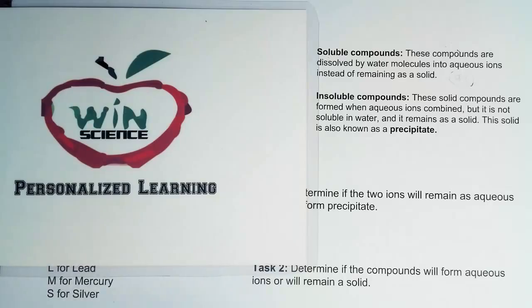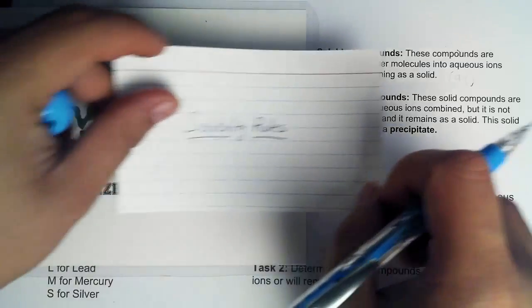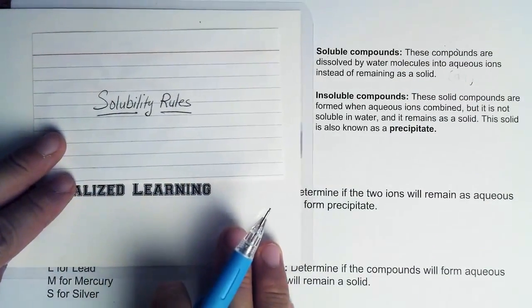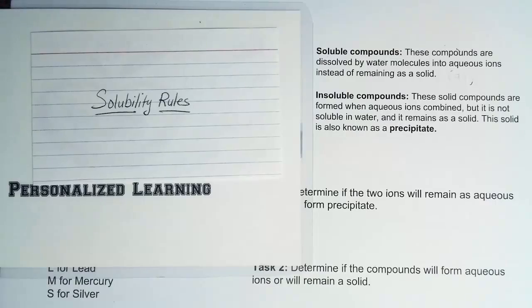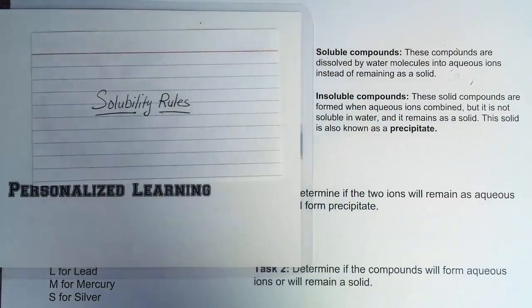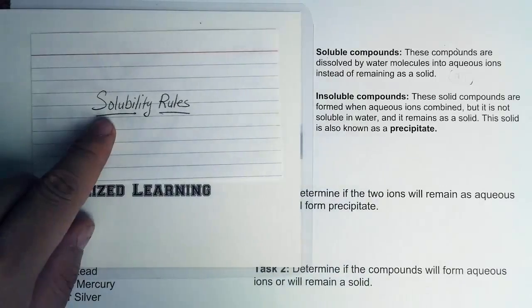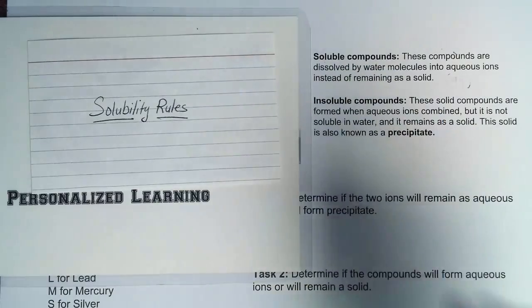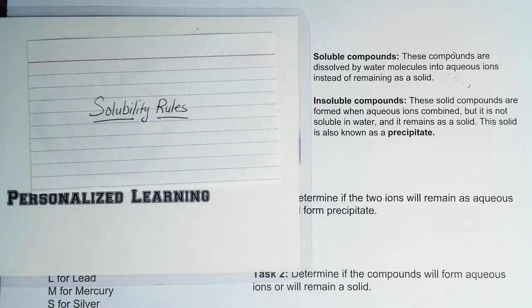In this lesson we are going to learn about solubilities and specifically the rules of solubility. To understand solubility we need to look at the terms soluble and insoluble. When a compound is soluble it is being dissolved by water molecules — because water is the most common solvent — into aqueous ions instead of remaining as a solid.